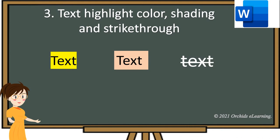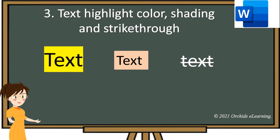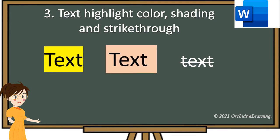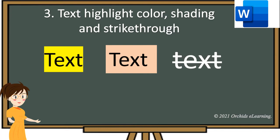To make text look like text marked with a highlighter pen, we use Text Highlight Color. Shading is used to color the background behind the selected text. And Strikethrough draws a line through the middle of the selected text.